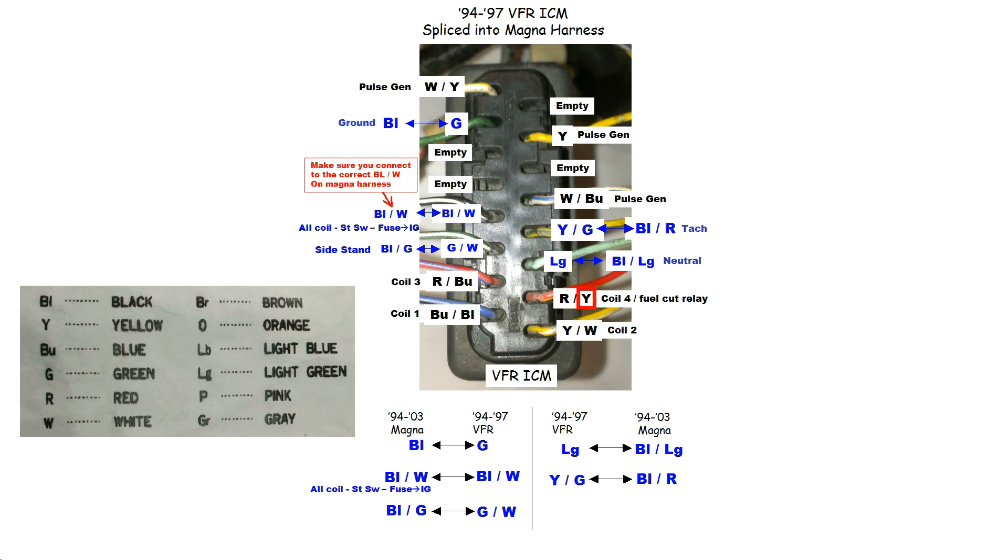You can find the abbreviations for the colors on the lower right-hand corner of the wire diagram in the service manual. BL is black, Y is yellow, VU is blue, G is green, R is red, and so on and so forth.